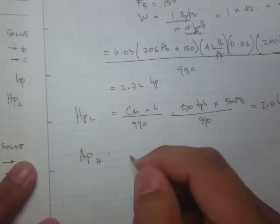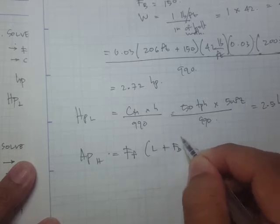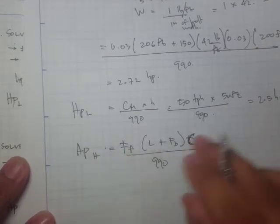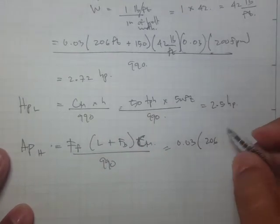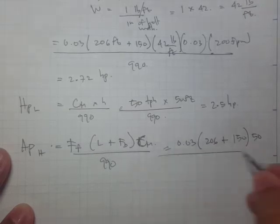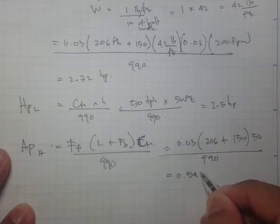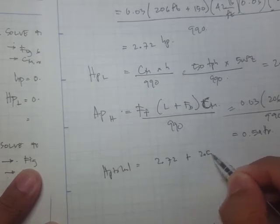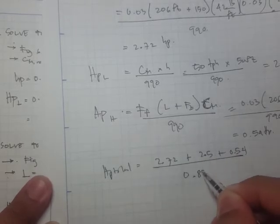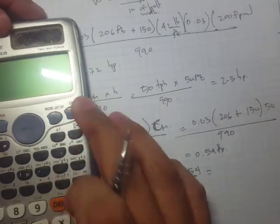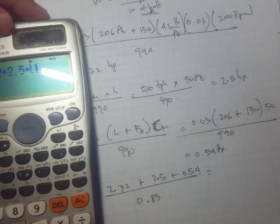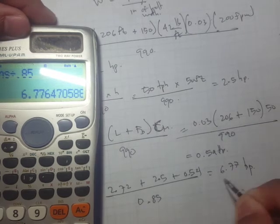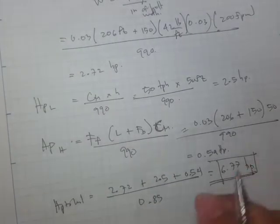For the horsepower required to convey the material horizontally: 0.03 × (206 + 150) × 50 / 990 = 0.54 HP. Therefore, total HP = (2.72 + 2.5 + 0.54) / 0.85 = 6.77 HP. It turns out we get a higher value compared to the graphical method. However, for shorter distances the equation method may give a lower value.